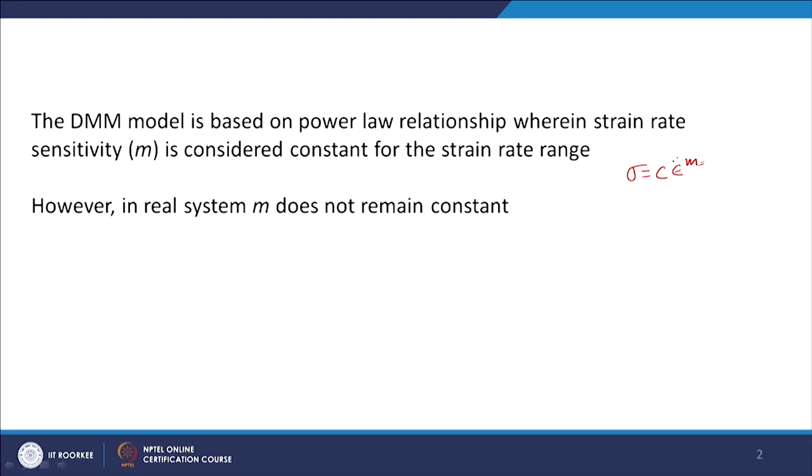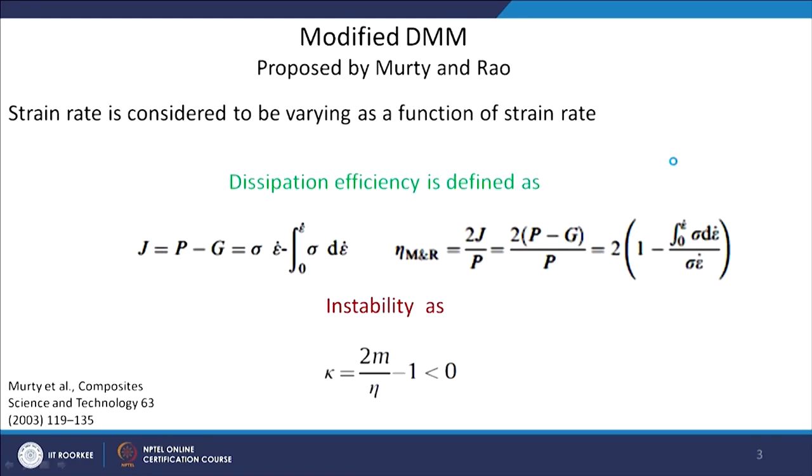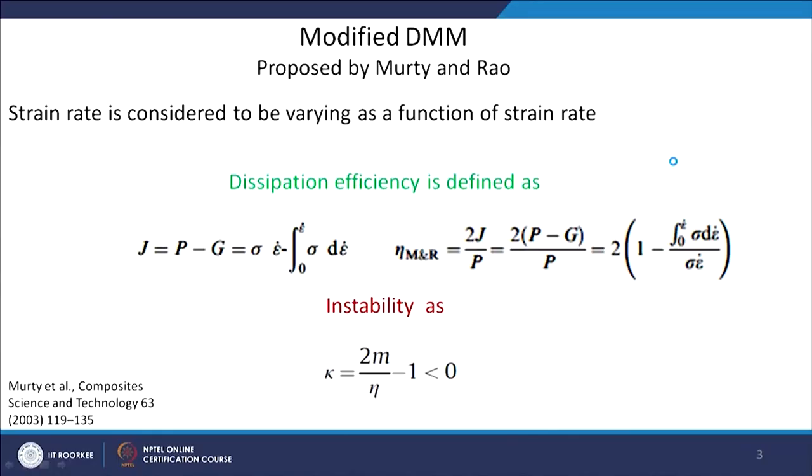To take this into account, another model proposed by Moorthy and Rao, also called Moorthy and Prasad Rao, is usually called the modified DMM. They proposed both the dissipation efficiency — how efficiently the material is able to dissipate power through microstructural change rather than only through heat — as well as the instability criteria.